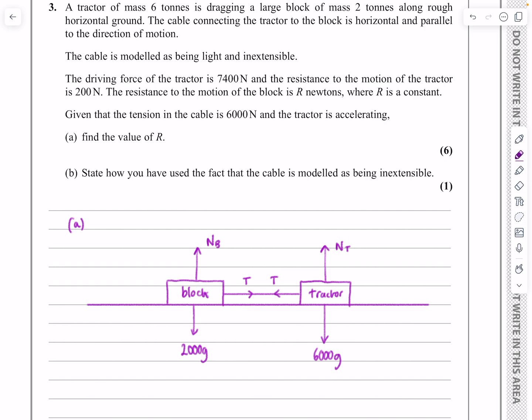Let's read through to see what we've got in terms of forces. It says the driving force of the tractor is 7,400 newtons. So I've got a force of 7,400 newtons acting there. Resistance to motion of the tractor is 200. Okay, so I just need to tidy up this diagram now then. So let's just get rid of those for a second. I've got 200 newtons that's just the resistance of the tractor and R, which is the resistance of the block.